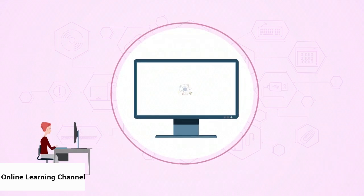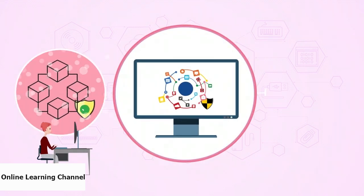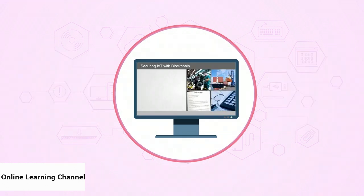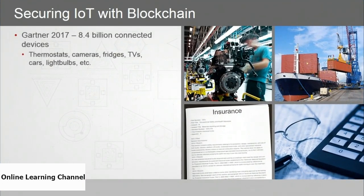According to Gartner, in 2017 there were 8.4 billion connected devices globally — thermostats, cameras, fridges, TVs, cars, light bulbs — more than one device per person around the globe. That number will keep growing. But the technology is still nascent, there are no regulations or standards, and while consumers are adding more connected devices to their households, hackers are gaining knowledge. IoT devices are becoming smaller, cheaper, and easier to acquire, and with each new connected device, the attack surface in our homes increases significantly.